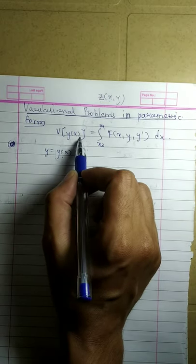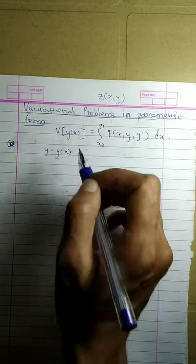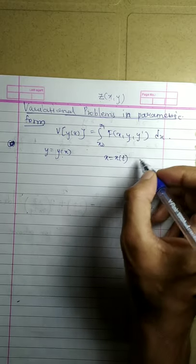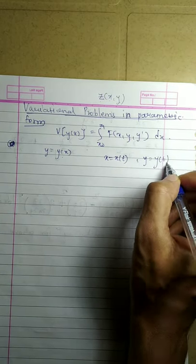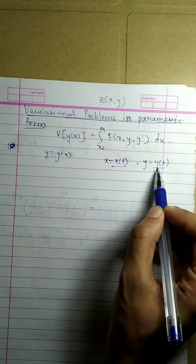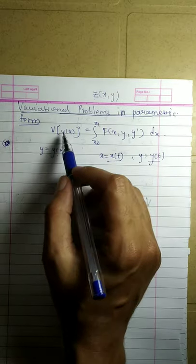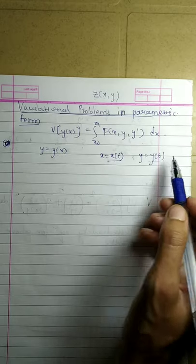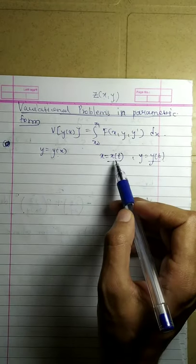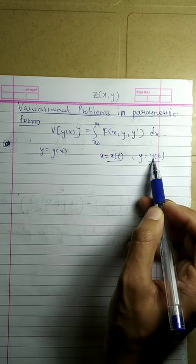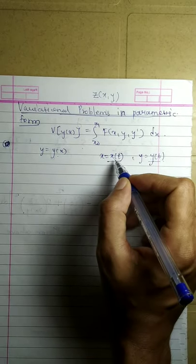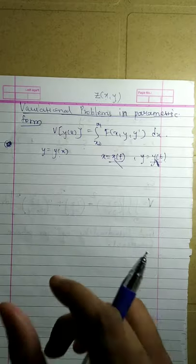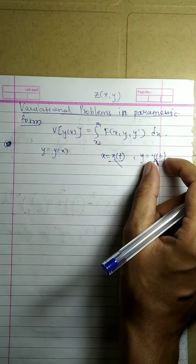We have to consider functionals where curves are given in parametric form — that is, instead of y = y(x), there will be curves of the form x = x(t) and y = y(t), and this functional will depend on these. So it is kind of a functional depending on two functions x(t) and y(t), but not exactly like what we have done already, because the functional does not depend on these functions independently but on the curve which is represented by these functions.